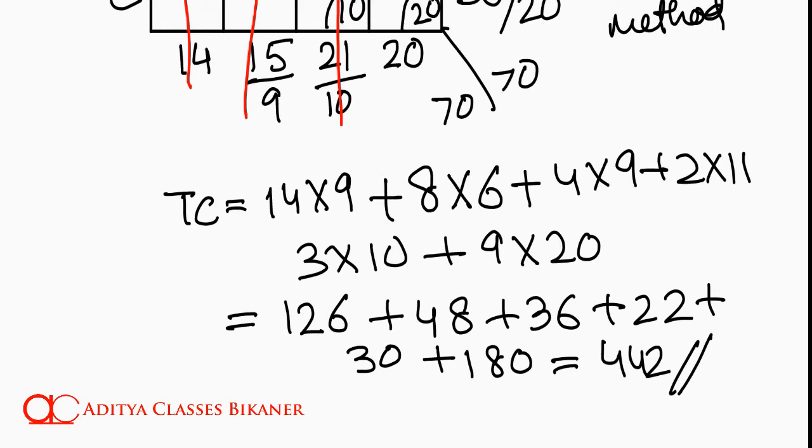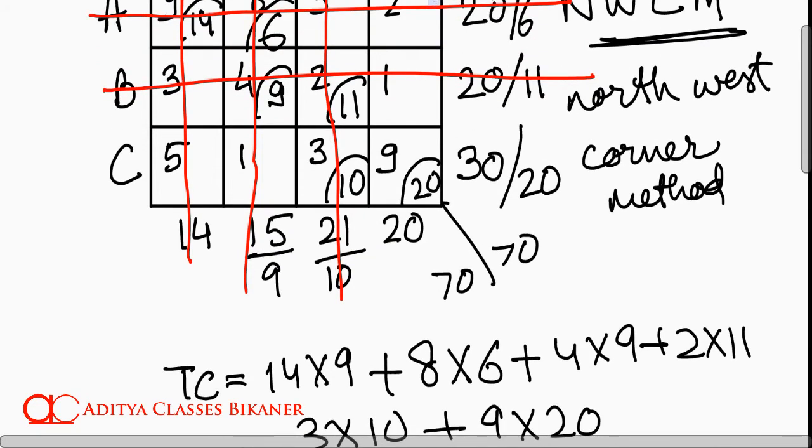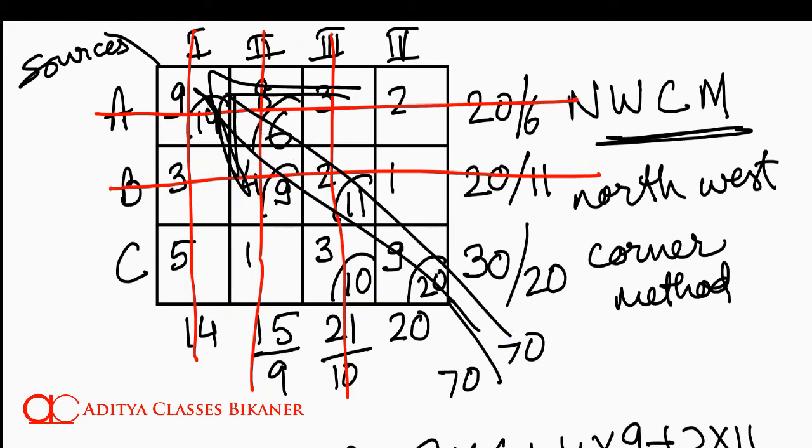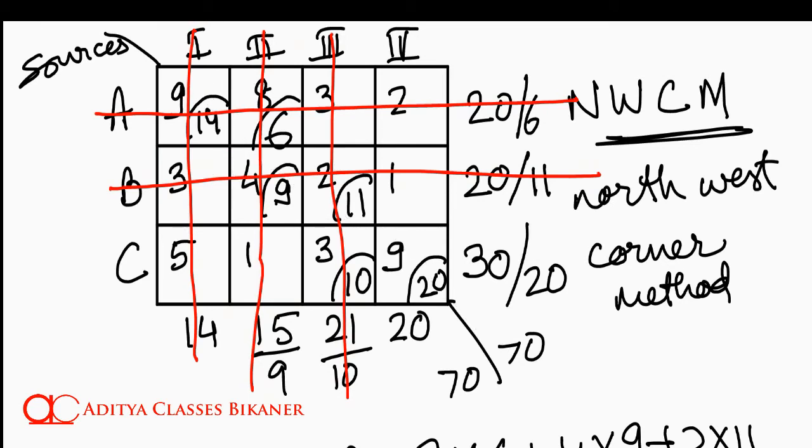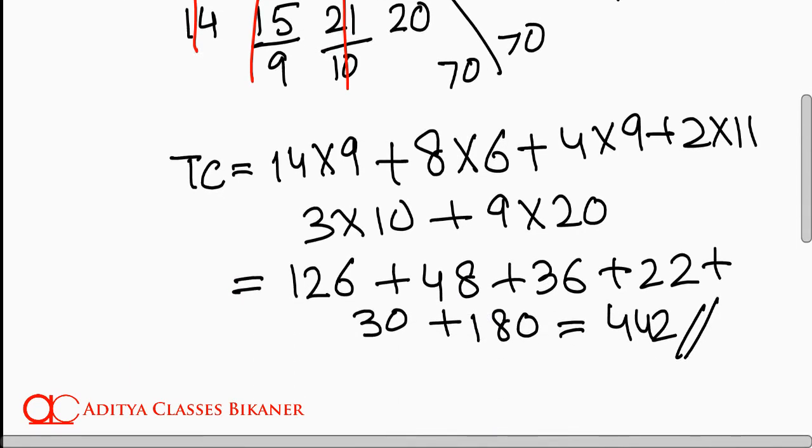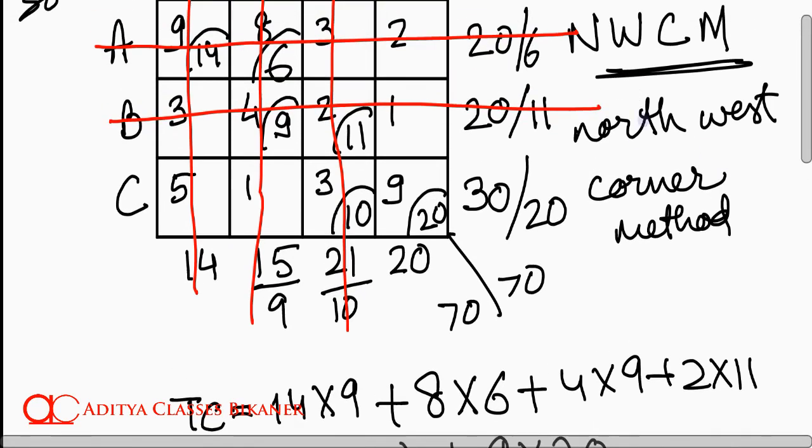So, this is a very easy technique. You need not go and look for the least cost or penalty or anything. All you need to do is jump to the northwest corner and just make an assignment over there. Next time when we meet, we will discuss another technique for IBFS of a transportation problem. This was Northwest Corner Method to solve a transportation problem. Thanks for watching and please do not forget to subscribe for latest updates. Bye-bye.